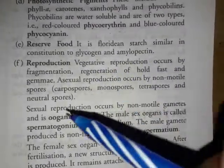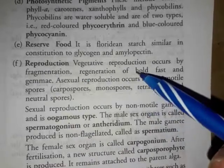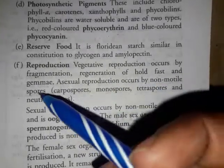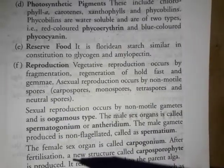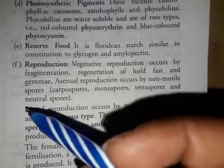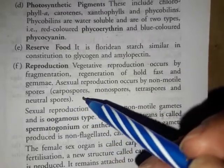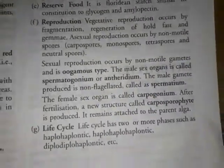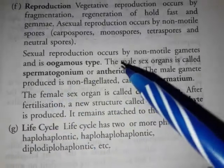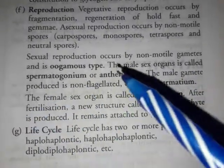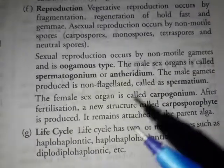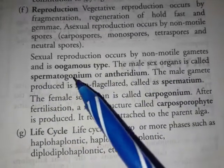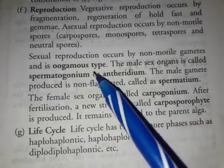Asexual reproduction occurs by non-motile spores — carpospores, monospores, tetraspores, and neutral spores. Sexual reproduction is by non-motile gametes. Since gametes are non-motile, it is obviously oogamous — in which the male gamete can be active.